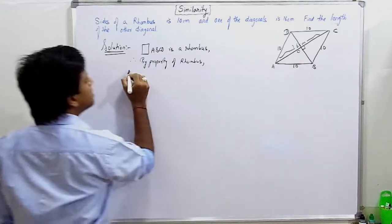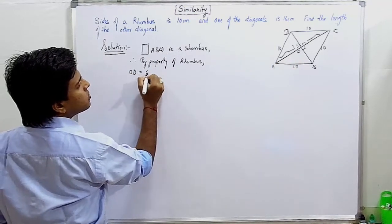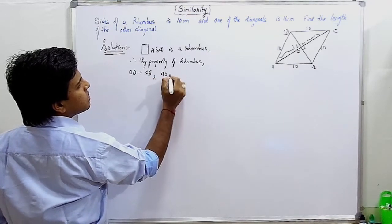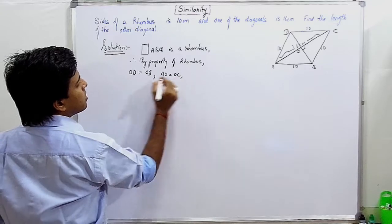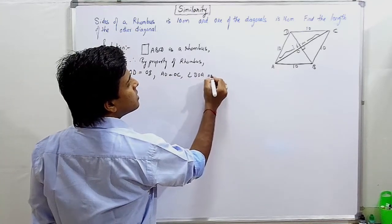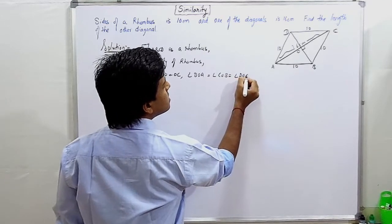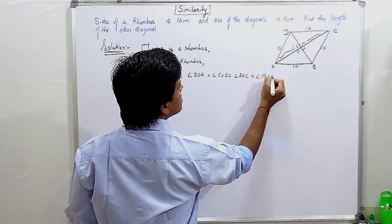OD is equal to OB and AO equal to OC, or angle BOA equal to angle COB, equal to angle DOC, equal to angle AOD, equal to 90 degrees.